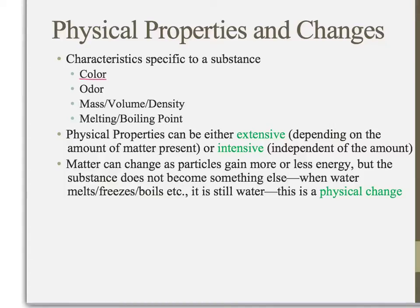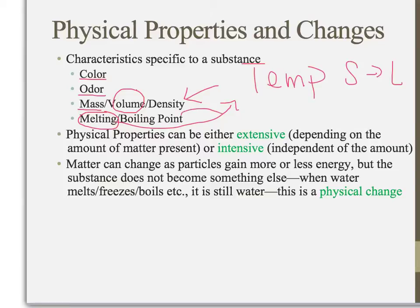Color can be a property, odor is often a property. These three we have worked with a little bit so far this year: mass, volume, and density. Mass is how heavy it is, volume is how much space it occupies, and density is a comparison between those two factors. Then melting point — the temperature at which something goes from being a solid to a liquid. Boiling point is a similar property: the temperature at which something goes from being a liquid to becoming a gas.